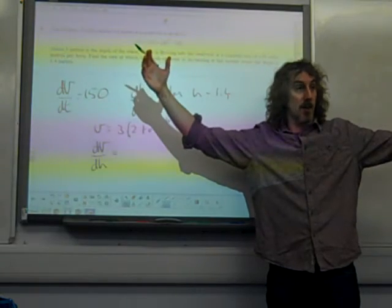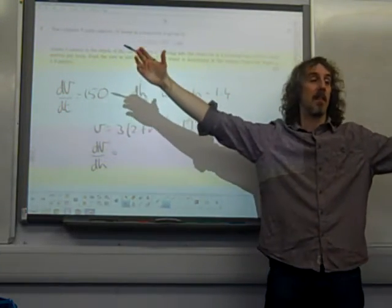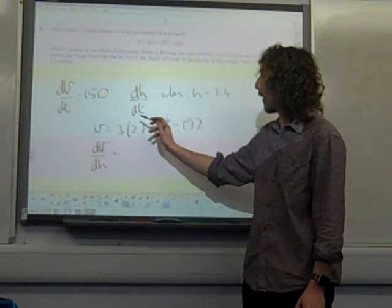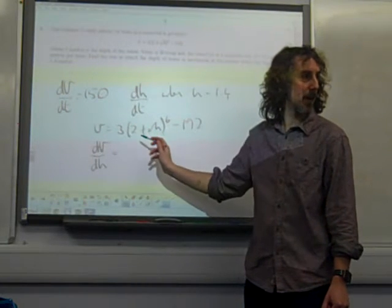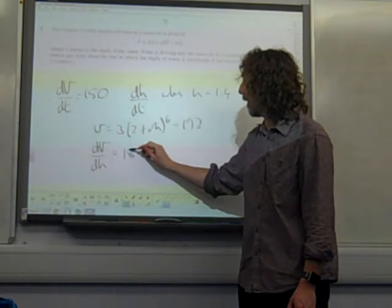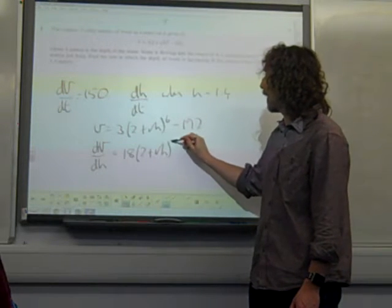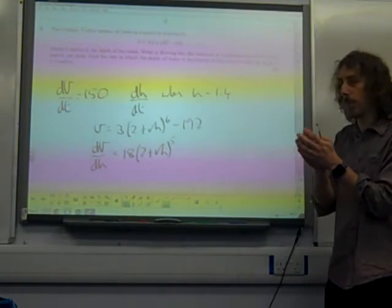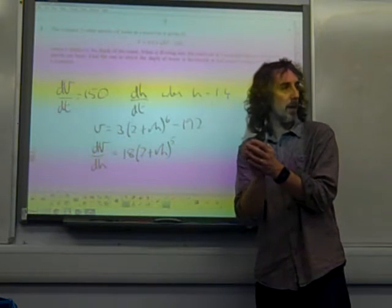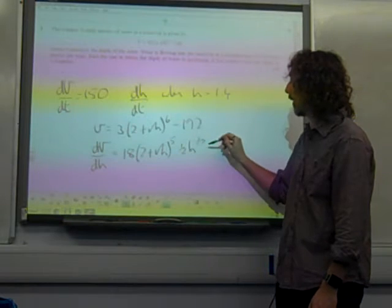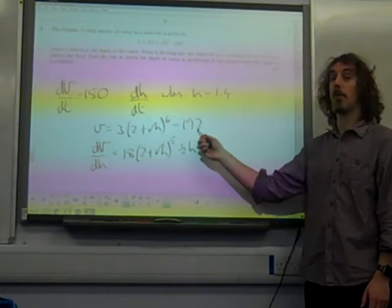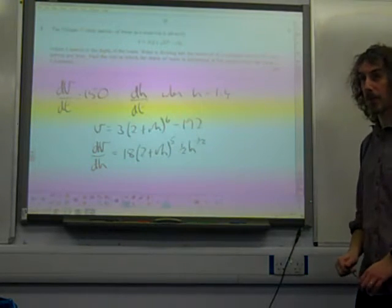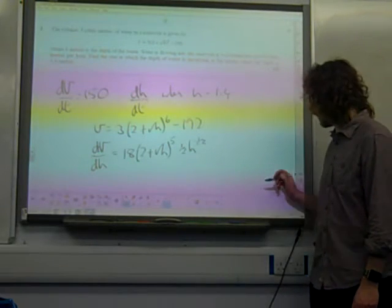This is a chain rule, isn't it? It's something to the 6. If you differentiate something to the 6, you get 6 times the something to the 5. We've also got a 3 that we're multiplying by. So this is 6 times 3, which would be 18, times (2 plus root H) to the 5. But then of course we need to multiply by the derivative of the inside bit. And the inside bit is 2 plus H to the half. If we differentiate H to the half, we get a half H to the minus a half. And we're going to differentiate minus 192, but that goes to 0. So we don't need to write anything with that. So there's our expression. A pretty complicated expression for differentiating that.